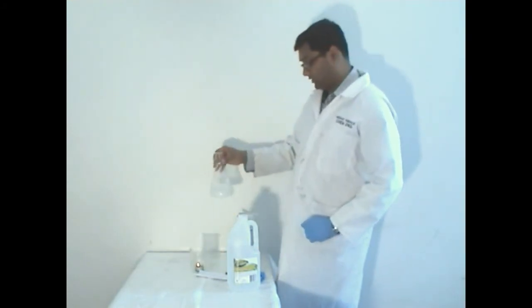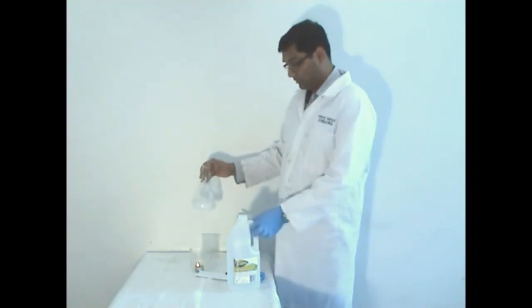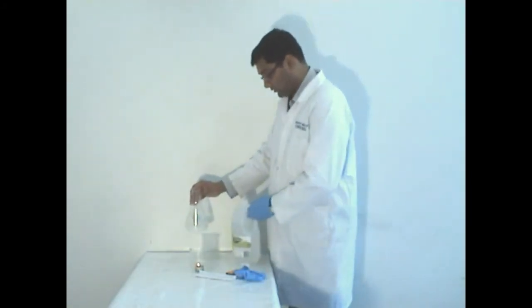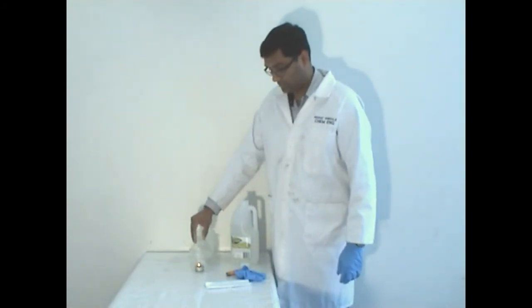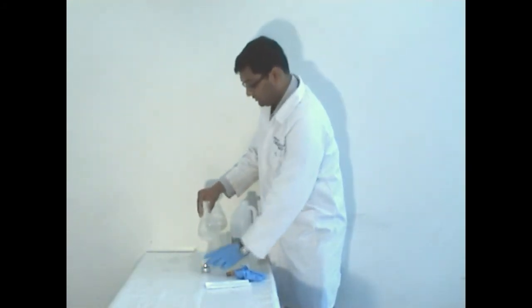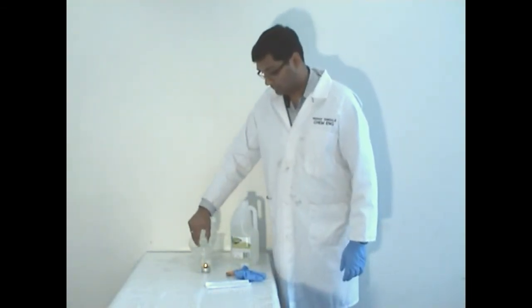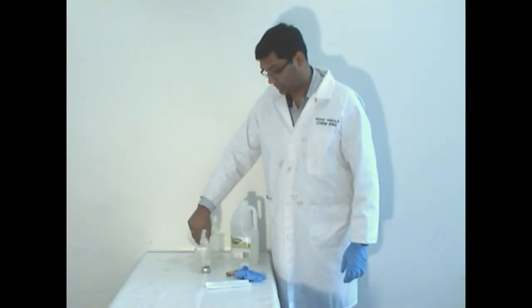Now remember, this flask should contain some carbon dioxide. Now what I'm going to do is slowly pour this carbon dioxide into the beaker. And hopefully you will see this flame go out. There it is.